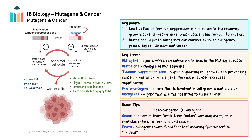Oncogenes are mutated or abnormally expressed versions of proto-oncogenes, and they have the potential to drive cancer development. A mutation in a proto-oncogene can result in an oncogene that promotes uncontrolled cell division by bypassing normal cell cycle checkpoints and regulatory mechanisms. When a proto-oncogene is mutated into an oncogene, the affected cell can progress through the cell cycle without proper regulation. This unregulated growth contributes to cancer development. As the cells divide, they pass the mutation to their daughter cells, leading to a growing population of cells with similar abnormalities. Over time, this accumulation of unregulated cells can form a tumour.